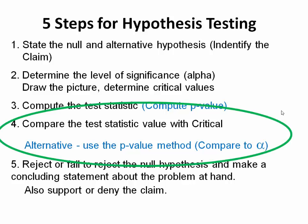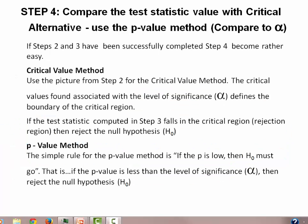In this particular session, we're going to look at comparing the test statistic with the critical value. And as an alternative method, we're going to be able to use the p-value and compare it to alpha. This is step four. If we have successfully completed steps two and three, then step four becomes rather easier — rather academic.